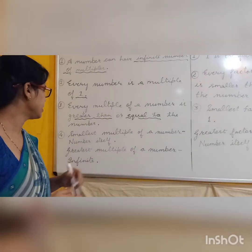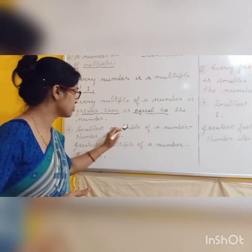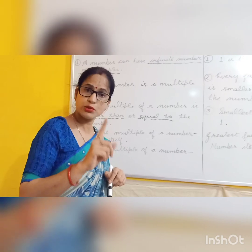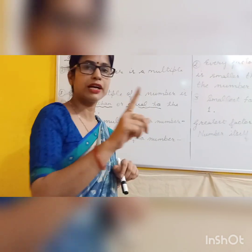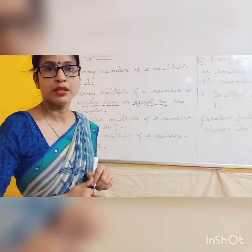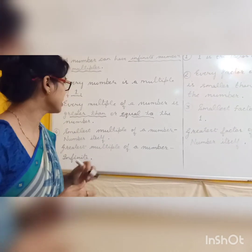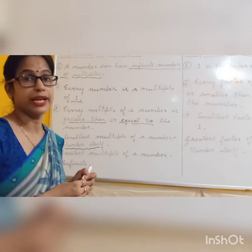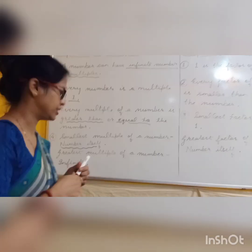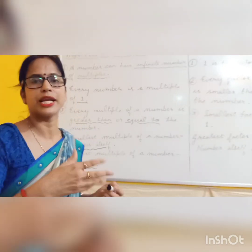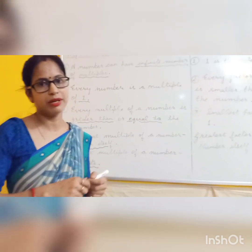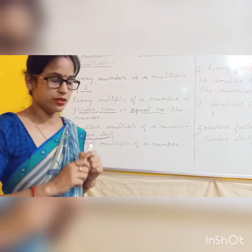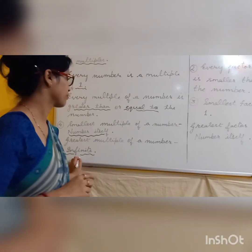The fourth property covers the smallest and greatest multiple of a number. The smallest, or first, multiple of a number is the number itself — for example, first multiple of 5 is 5, of 7 is 7, of 8 is 8, of 10 is 10. The greatest multiple of a number is infinite, meaning we cannot determine it, because there is no end to numbers and therefore no end to multiples.